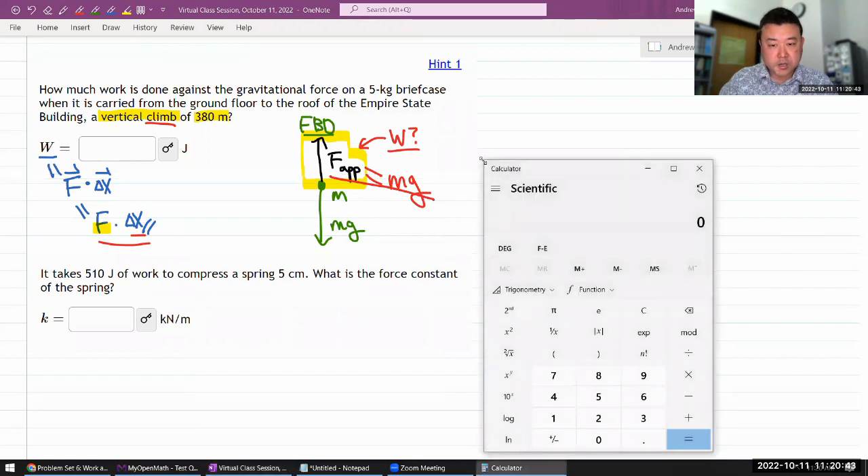Hopefully by now this is simple enough. You can say that this applied force must be equal to its weight. So that should give us the correct answer for the work done against the gravitational force. Let me just calculate the number. So gravitational force, 5 times 9.8, that's equal in magnitude to the applied force, times the displacement, 380 meters. So amount of work done will be 18,620 joules.